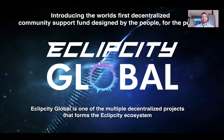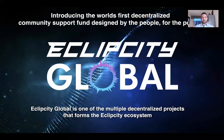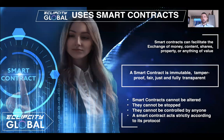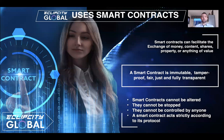Eclipse City Global is one of the multiple decentralized projects that forms the Eclipse City ecosystem. Eclipse City Global uses smart contracts. A smart contract is basically a contract that can facilitate any kind of money, content, shares, property, or anything of value. A smart contract is immutable, tamper-proof, fair, just, and fully transparent. It cannot be altered, stopped, or controlled by anyone — it acts strictly according to its pre-written protocol.